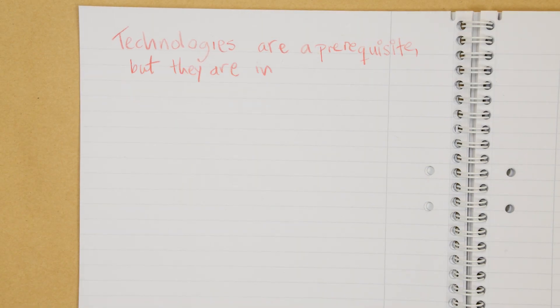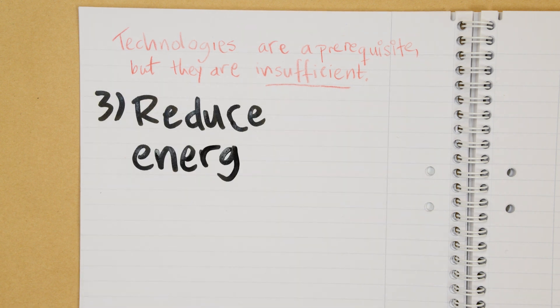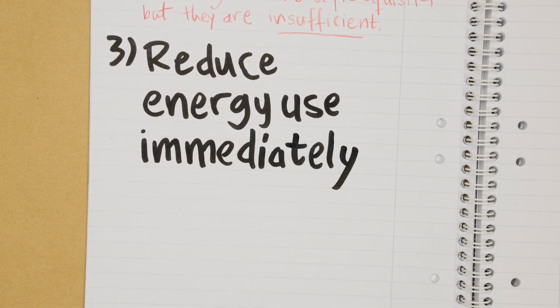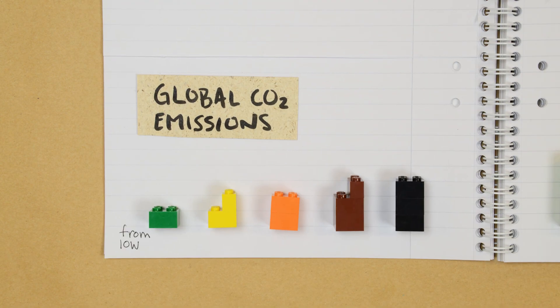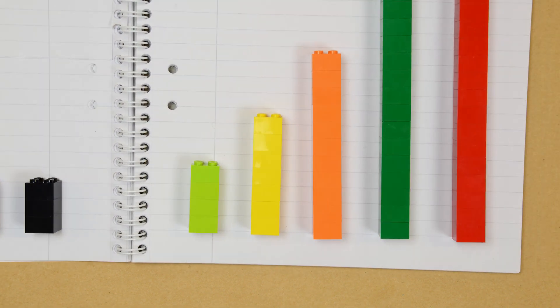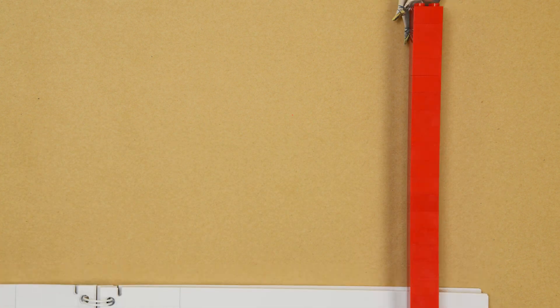Finally, though technologies are a prerequisite, they are insufficient. Delivering immediate reductions in energy use and hence fewer carbon emissions by high energy users is now critical. There's a huge asymmetry in individuals' carbon dioxide emissions. Very approximately half of global emissions arise from the activities of just 10% of the global population.